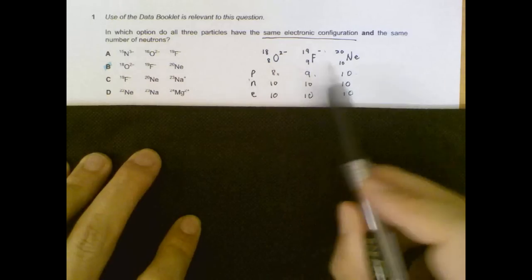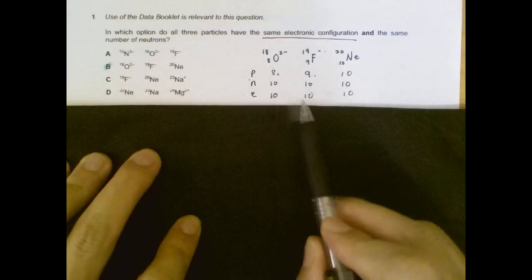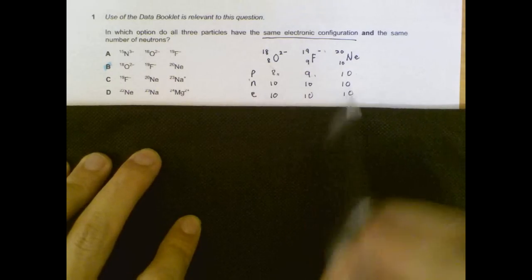Oxygen, oxide, fluoride and neon will have 10 electrons each and 10 neutrons each.